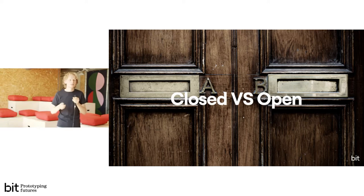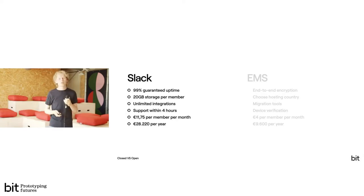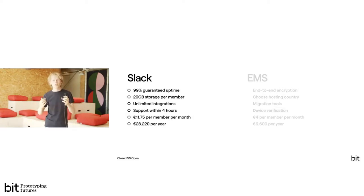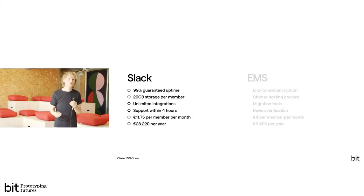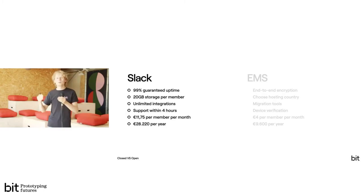Let's compare a closed and an open network directly. On the closed side: Slack. Slack has a guaranteed uptime of 99%, 20 gigabytes of storage, unlimited integrations, and support within four hours. For a company of 200 employees, Slack charges €11.75 per member per month — about €28,000 per year. But consider: who are Slack's competitors? Slack doesn't encrypt stored messages, their databases are in the US where government legislation can allow access, and they don't offer end-to-end encryption.